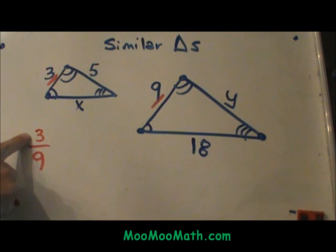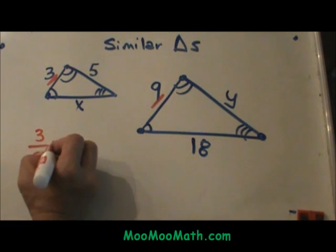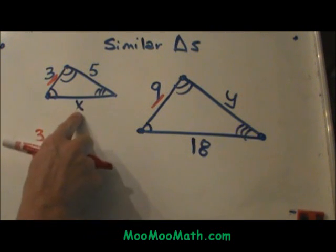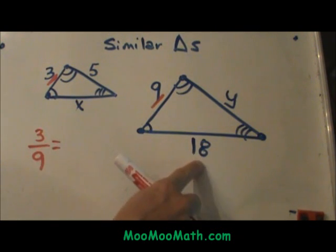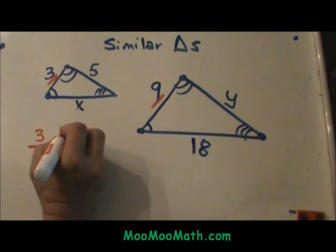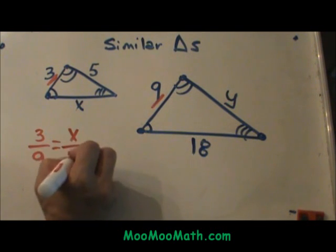So I'm putting my smaller triangle on top and my larger triangle on the bottom. Now I don't know the side x, but I know it corresponds to 18. So since this is part of the small triangle, I'm going to put in x over 18.